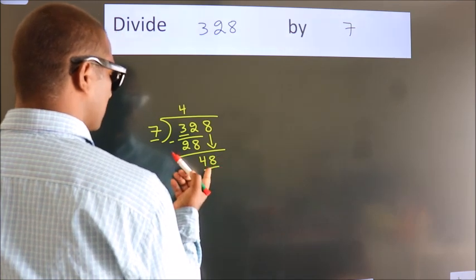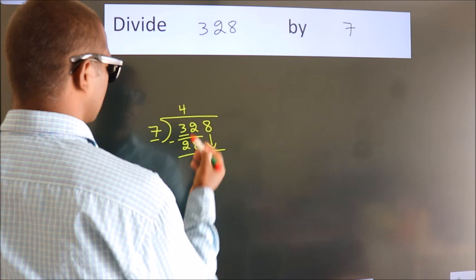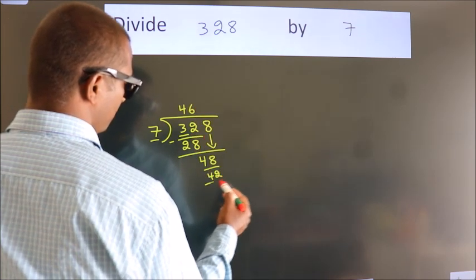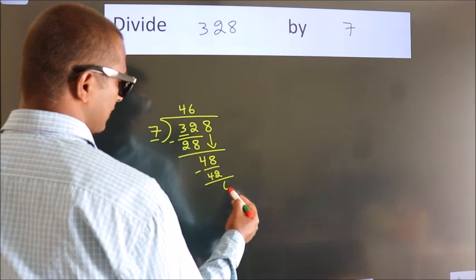A number close to 48 in the 7 table is 7 sixes, 42. Now we subtract. We get 6.